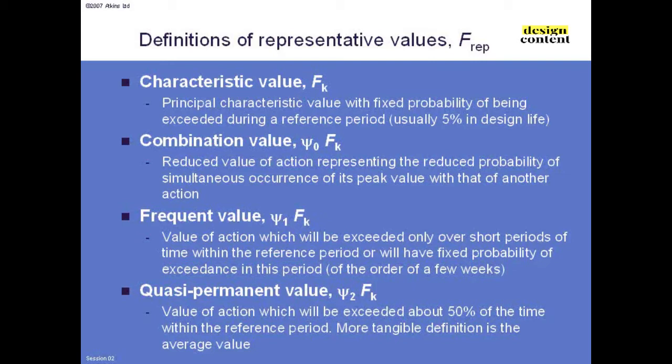Because psi_2 for traffic loading is zero, when we check crack widths for reinforced concrete we check in the quasi-permanent combination, which means without any traffic. However, temperature does have an average value — the psi_2 for temperature is approximately 0.5 — so when doing crack width checks we do have to allow for temperature. Things are very different from how they used to be, but in many ways much more logical.